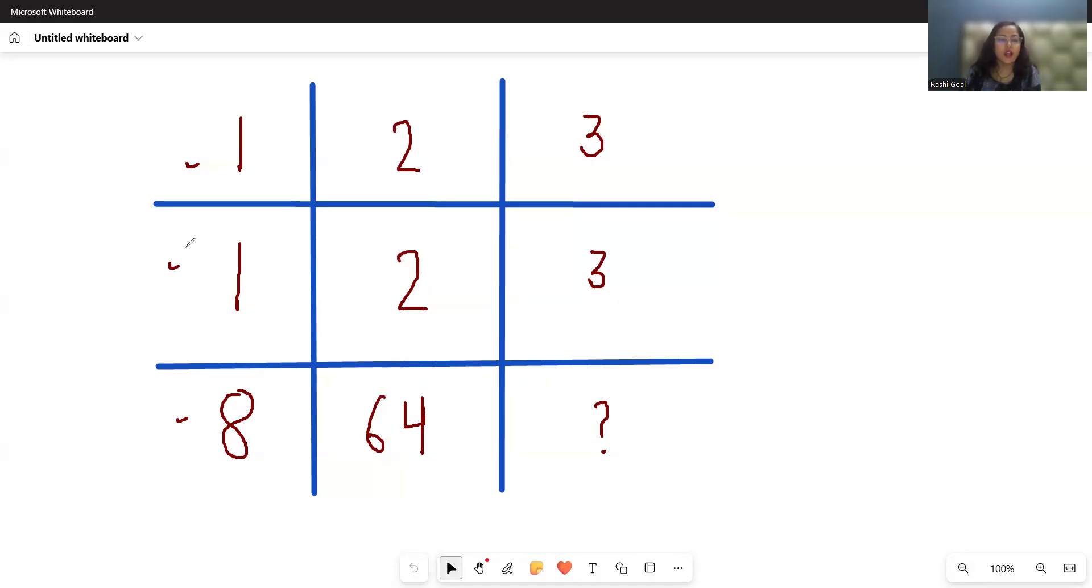So 1 and 1 gives 8, how? If I add both the columns, 1 plus 1, this gives us 2, and the cube of 2 is 8. Similarly, 2 plus 2 is 4, and the cube of 4 is 64.